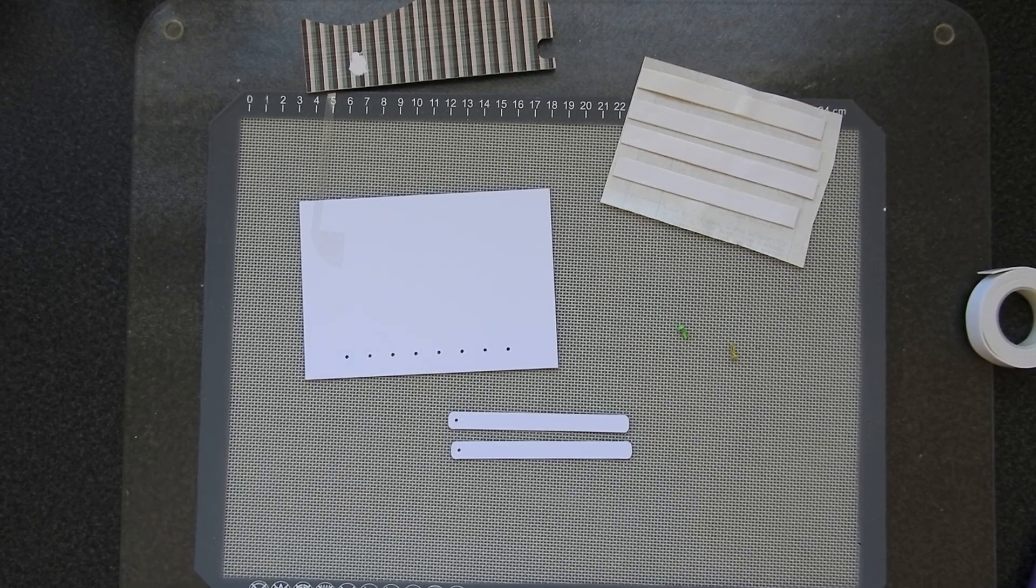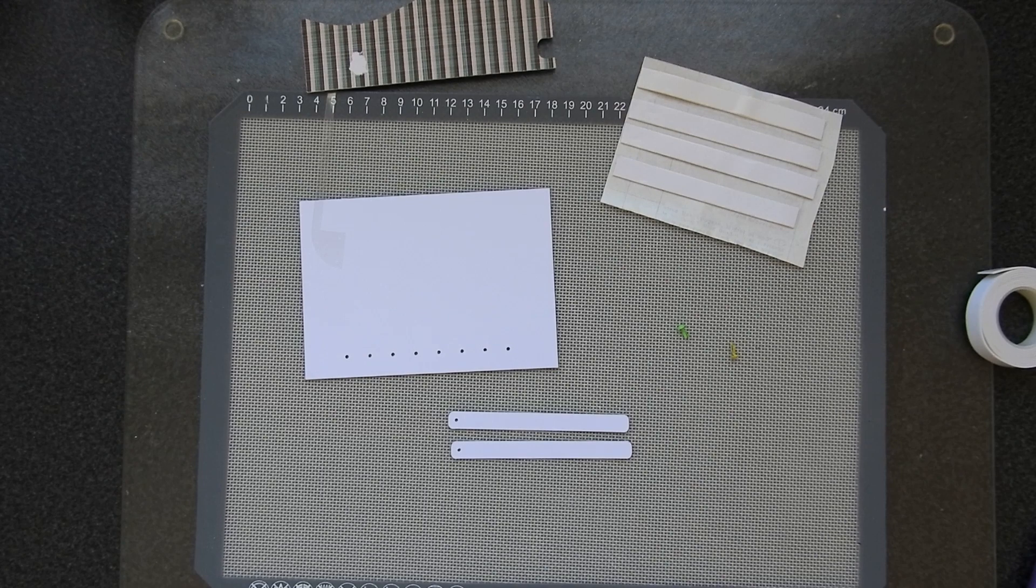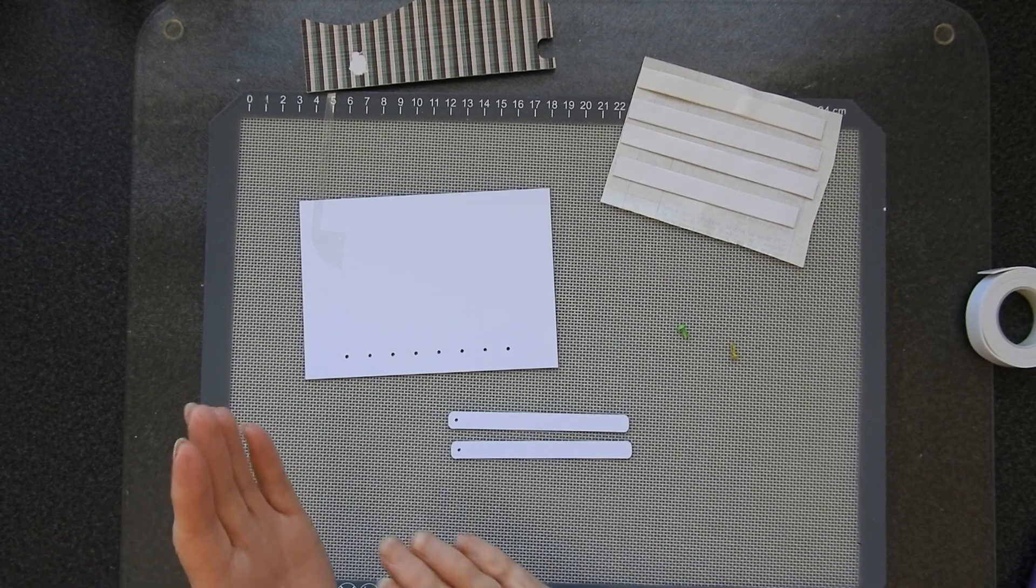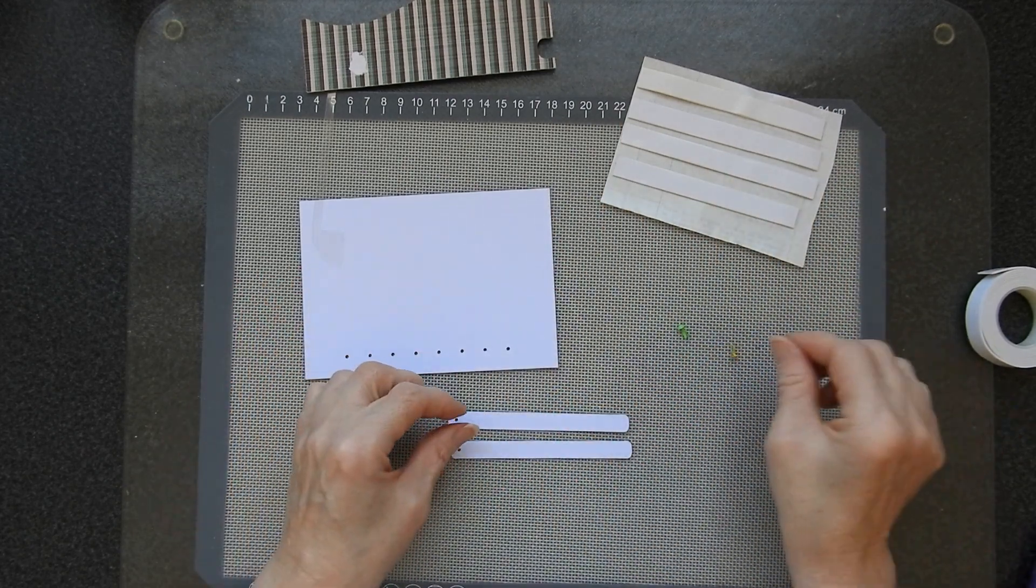Hi there, Sandra here from Create in Spain. Today I am doing an interactive card. It's a wiper type card where something moves from side to side like that, like a windscreen wiper.